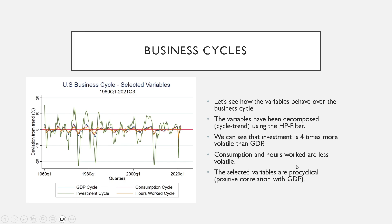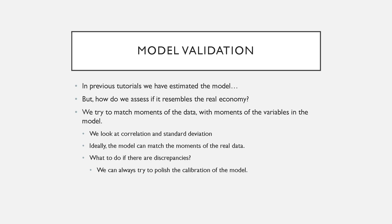Consumption and hours worked are less volatile than GDP. Over the evolution of GDP around the trend — which is what the cycle is — consumption and hours worked, which represents labor, follow very closely to GDP because these are very frictionless variables. Investment, however, is way more volatile; we see big changes when the economy is going through booms or recessions, as investment moves more aggressively over the cycle.